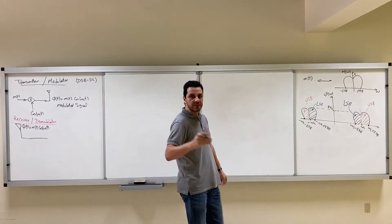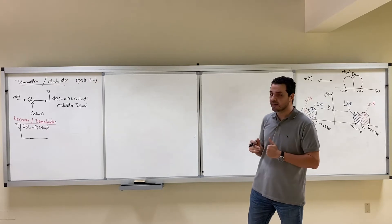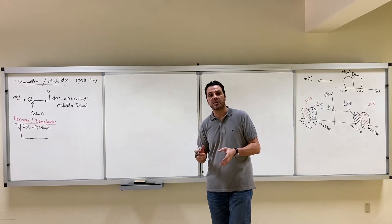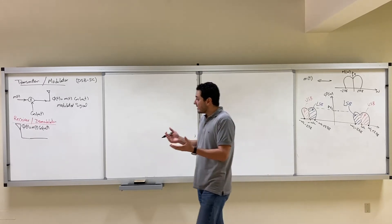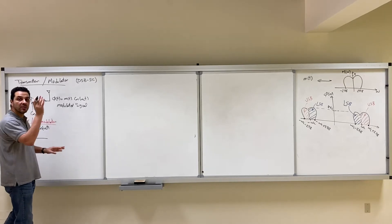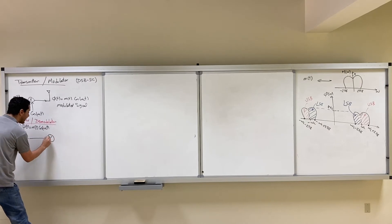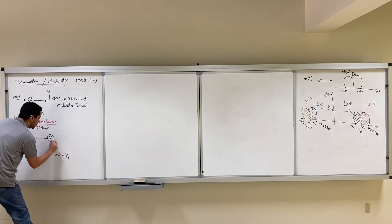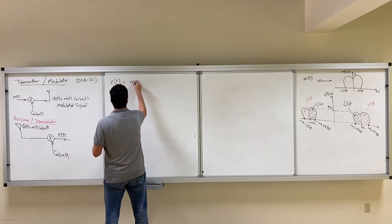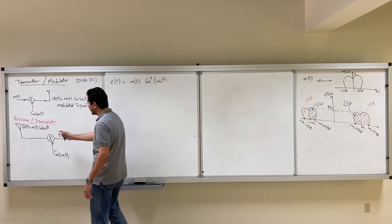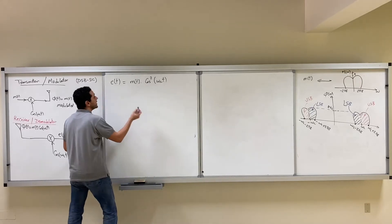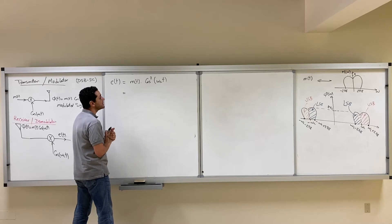The first idea is to divide by cos(ωct), but unfortunately this is practically impossible — it is very difficult to implement hardware that divides by a cosine wave. So we found another way, very similar to the modulator: we multiply again by cos(ωct). We get a signal E(t) = φ(t) · cos(ωct) = M(t)cos²(ωct).